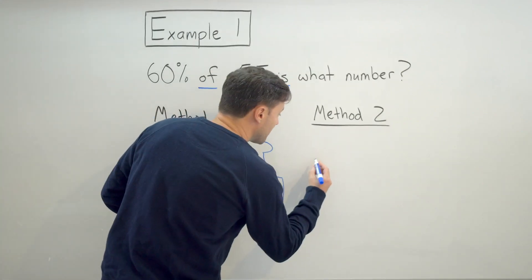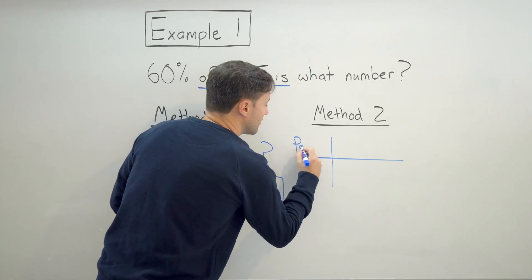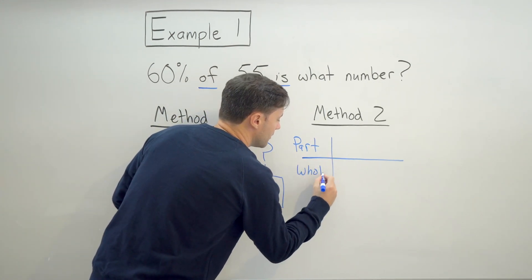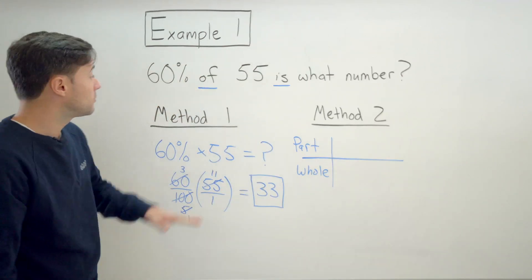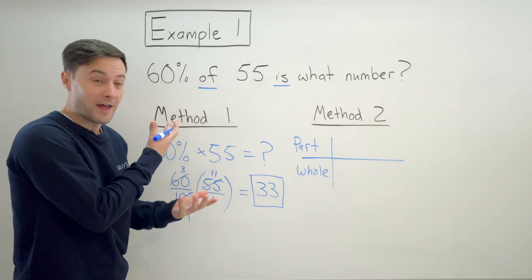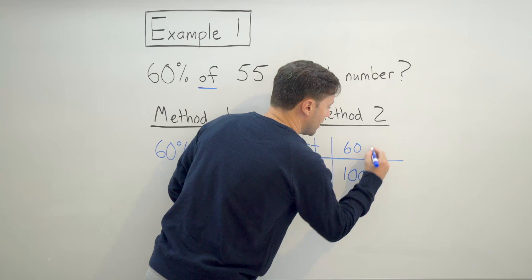So what I'm going to do is I'm going to make a ratio table with part on the top and whole on the bottom. And I'm going to start with my percent, 60%. So the part of that would naturally be 60 and the whole, just like every percent, is going to be 100.